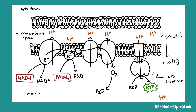The electron transport chain is a series of proteins and organic molecules found in the inner membrane of the mitochondria. Electrons are passed from one member of the transport chain to another in a series of redox reactions. Energy released in these reactions is captured as a proton gradient, which is then used to make ATP in a process called chemiosmosis. Together, the electron transport chain and chemiosmosis make up oxidative phosphorylation. The first key step is the delivery of electrons by NADH and FADH2, which transfer their electrons to molecules near the beginning of the transport chain, turning back into NAD+ and FAD to be reused.